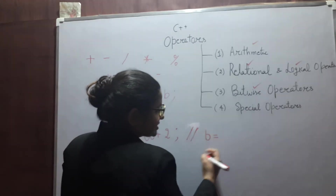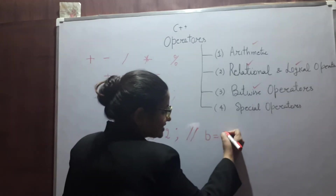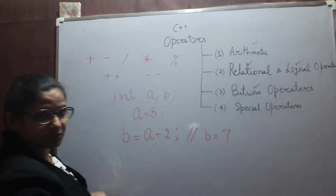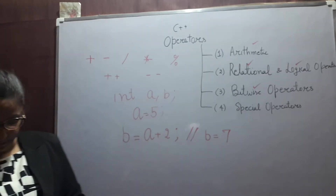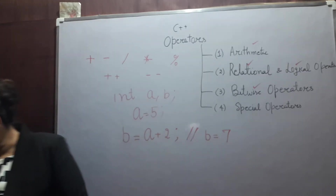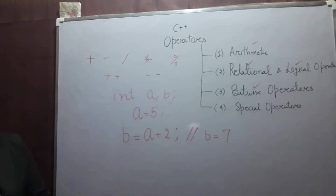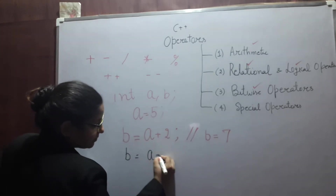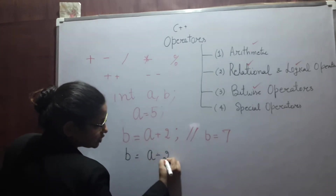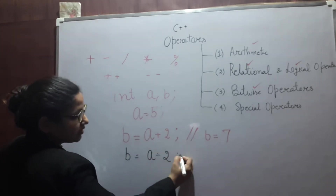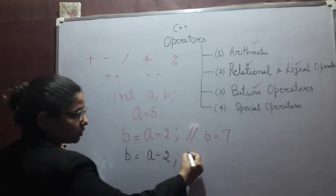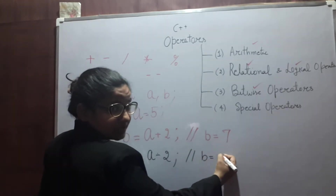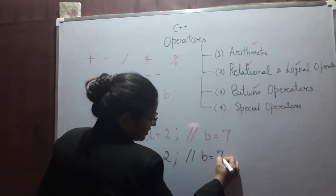This statement makes B equal to seven — five plus two equals seven. In the next statement, B equals A minus two, so B will become five minus two, which equals three.